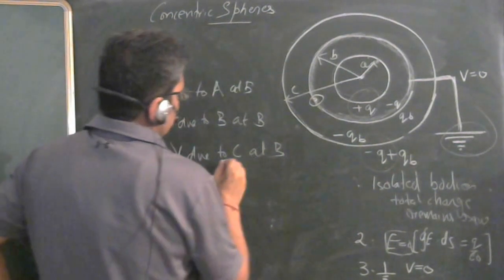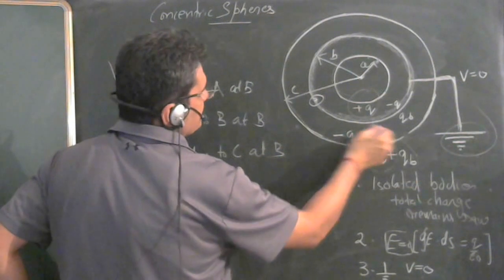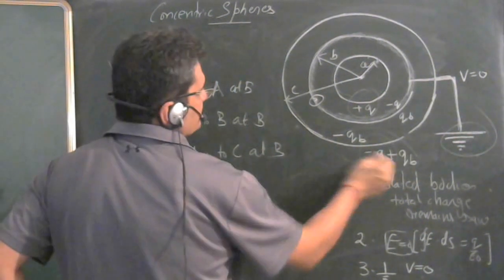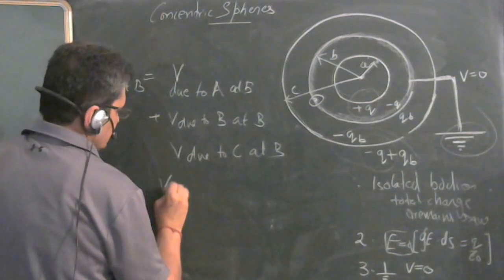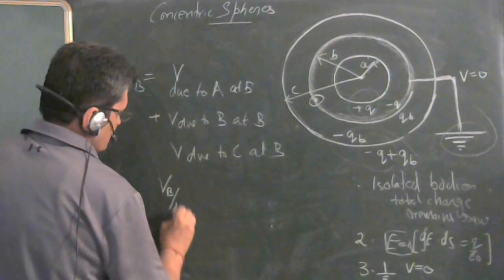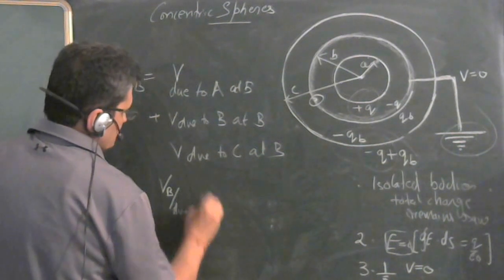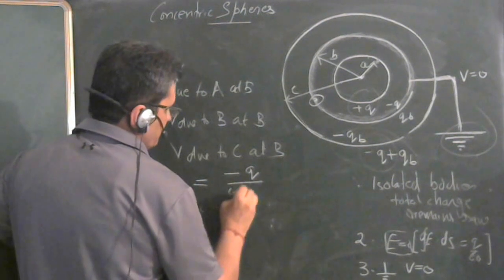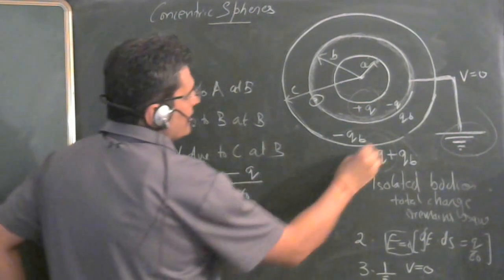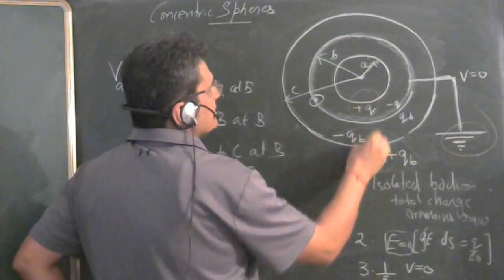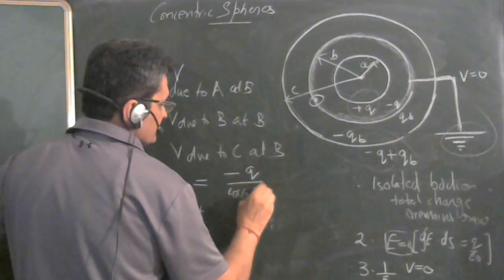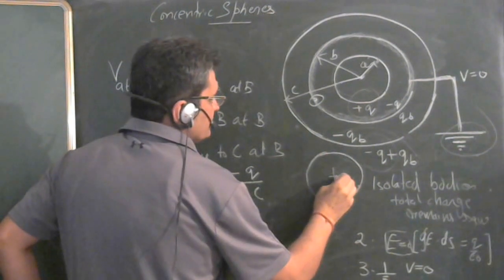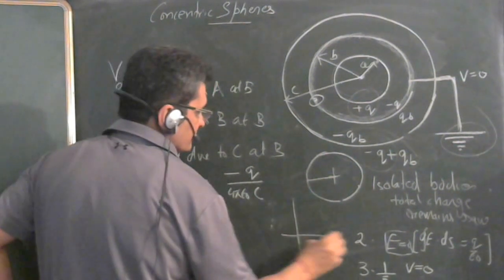Now, what is V due to C at B? What is the charge here? The total charge here is minus Q. So V due to C is equal to total charge is minus Q upon 4 pi epsilon zero. And you have to take this distance. Even if you are finding potential at B, distance has to be C. Because for a sphere, the potential inside is constant. For a shell, potential is like this.